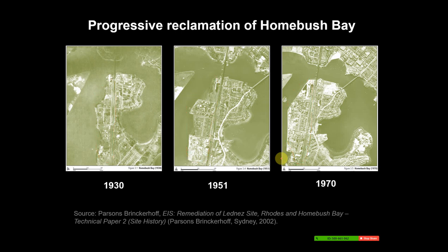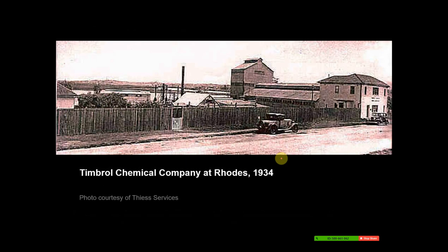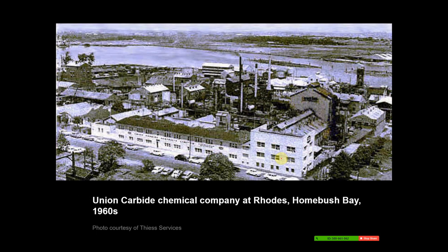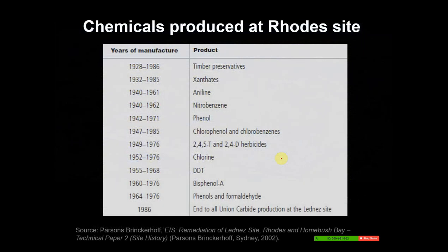There was a lot of industrial development there — an image from 1934 shows the Tronox Chemical Company, with a whole range of things being manufactured including paints. This is the Union Carbide chemical factory in the 1960s, when a lot of the contamination occurred. Here are some of the chemicals produced at the site.